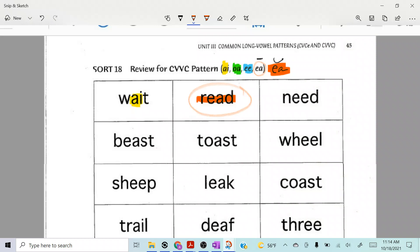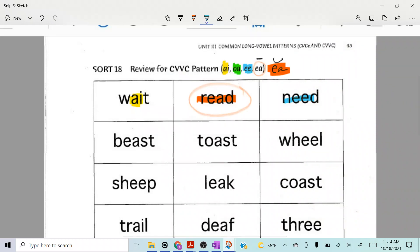How about need? Charlie, what color would that get? Need. What's the vowel combination there? Ee. So what color? Atta girl.